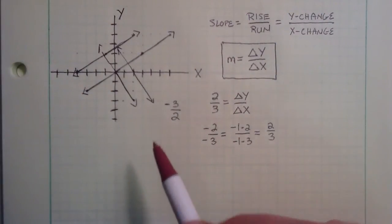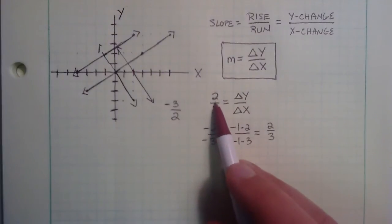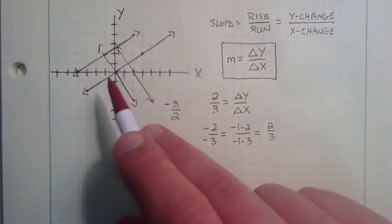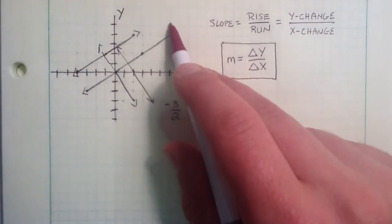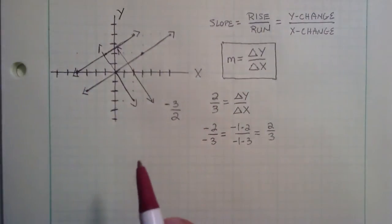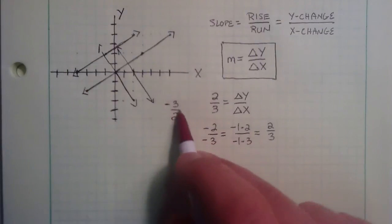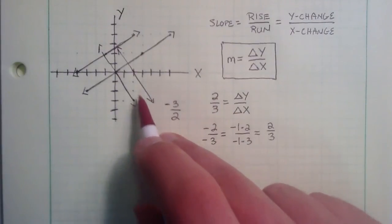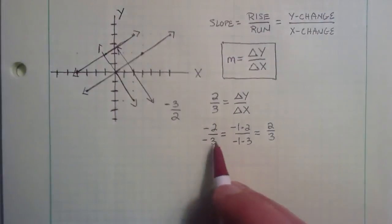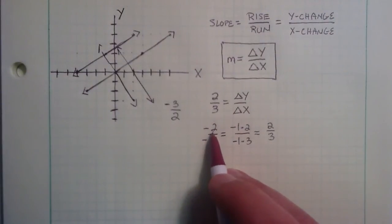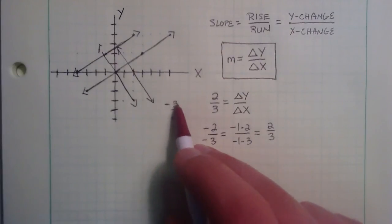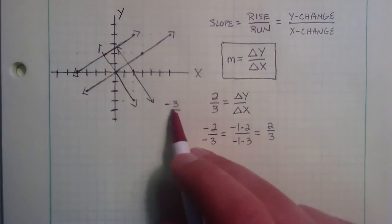Another thing to note is: if a line can be written in a positive form such as this, then it's going to have an increasing slope, meaning that its right side is always going to be higher on the y-axis than its left side. And if a slope is written in a negative form such as this, it's always going to be decreasing, meaning that its right side is going to be lower on the y-axis than its left side. Don't be confused — this is not a negative slope because it can be written as a positive number. This, on the other hand, can't be written as a positive number, so it's simply a negative slope.